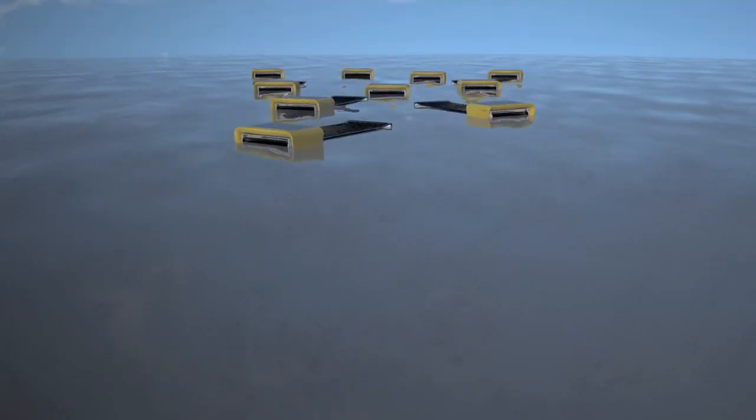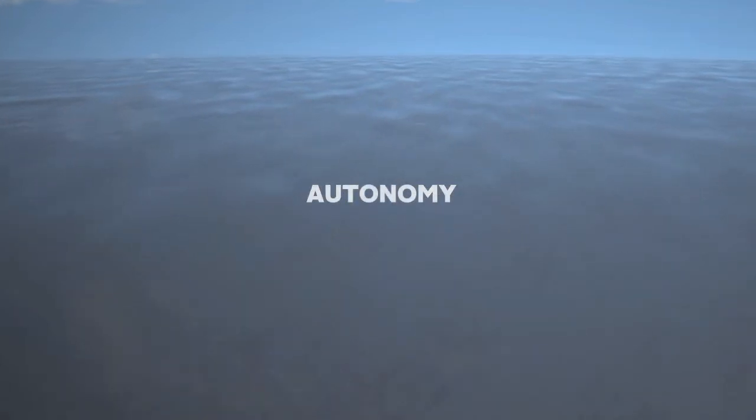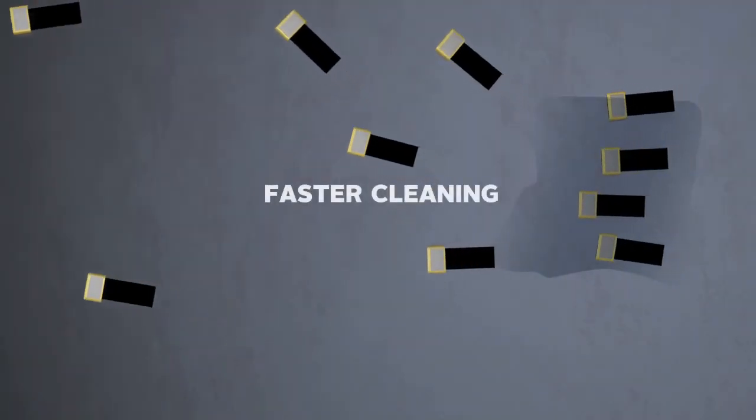By detecting the edge of a spill and moving inward, a single vehicle can clean an entire site autonomously or engage other vehicles for faster cleaning.